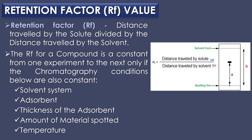The retention factor or RF value describes the relative mobility of a compound. It is defined as the distance traveled by the solute divided by the distance traveled by the solvent. For example, if a compound travels 2.1 cm and the solvent travels 2.8 cm, the RF value is 2.1 divided by 2.8, equal to 0.75. The RF for a compound is constant from one experiment to the next only if chromatographic conditions remain constant, including solvent system, absorbent, thickness of the absorbent, amount of material spotted, and temperature.